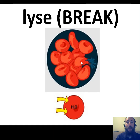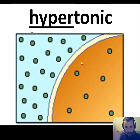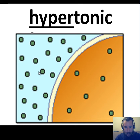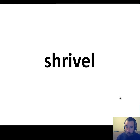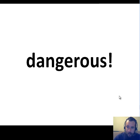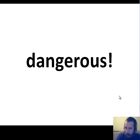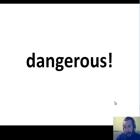If animal cells are placed in a hypertonic solution — higher concentration outside — water is going to leave the cell to even out that concentration, causing it to shrivel and shrink. Both situations, hypotonic and hypertonic, are dangerous for the cell. Hypotonic fills with water and bursts like an overfilled water balloon. Hypertonic causes the cell to become dehydrated and die. Animal cells really like isotonic solutions.